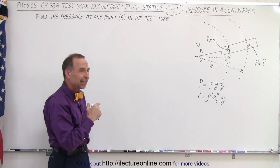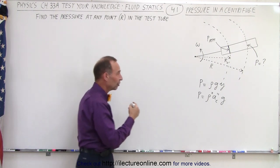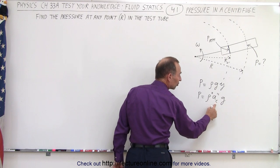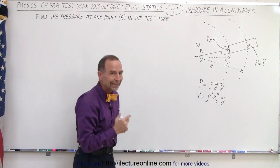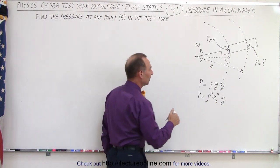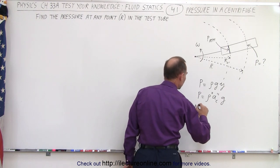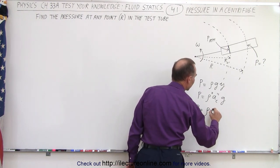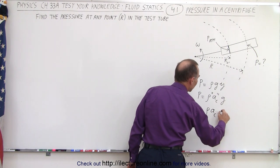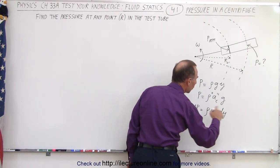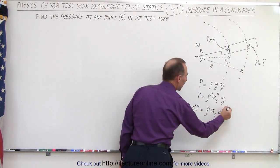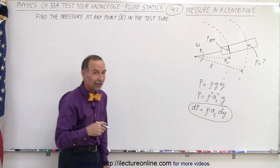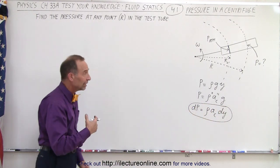Since pressure is not just a function of depth but also a function of the centripetal acceleration, what we need to do is say that a small change in the pressure, dp, is equal to the density times the centripetal acceleration times the small change in y. We have to express it like this, and since we have to write the pressure as a differential, we're going to need to integrate.